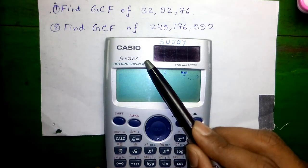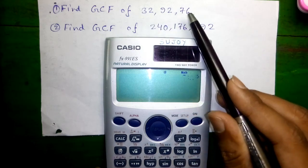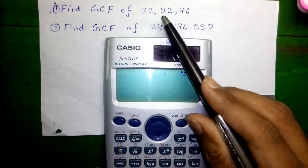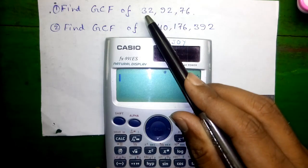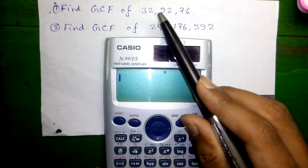First we'll find out GCF of 32, 92, and 76. So first we'll divide the largest number by the smallest number. So we'll divide 92 by 32.